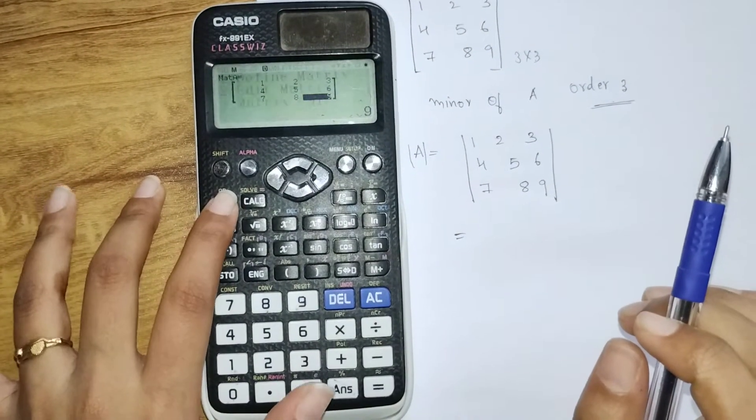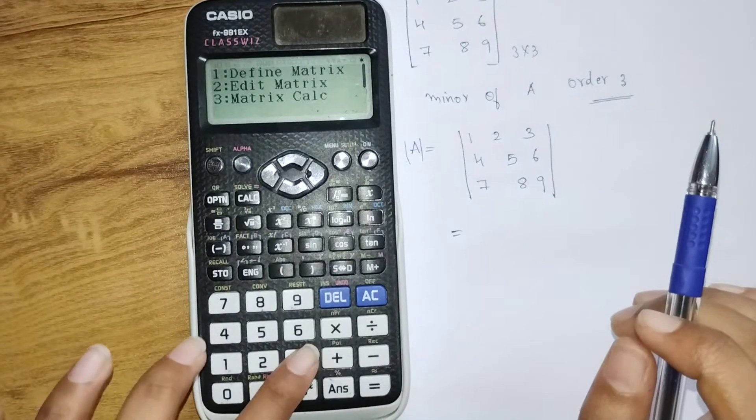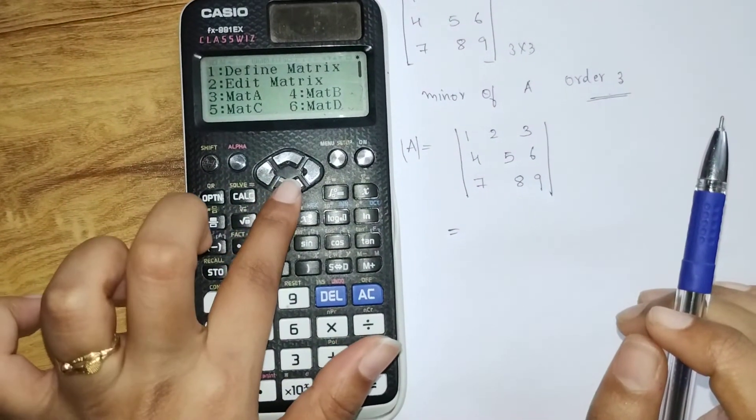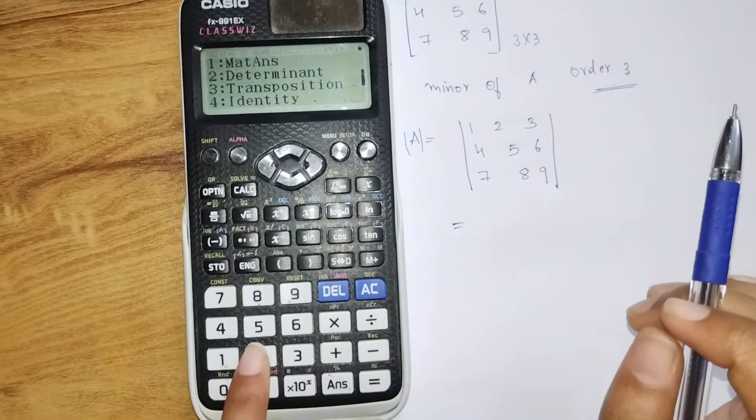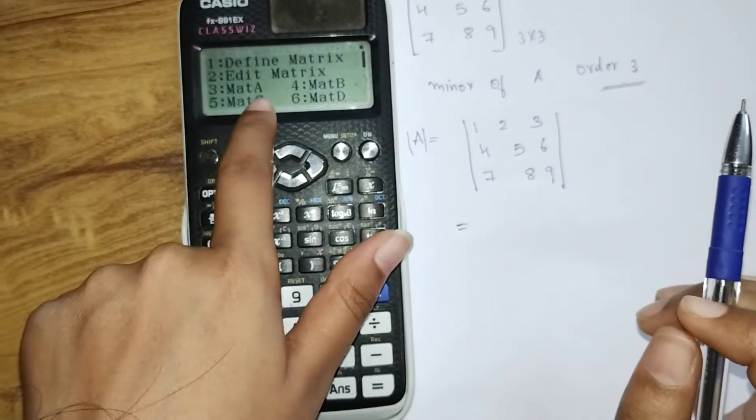Now again go to Option. We need matrix calculation, so that is 3. Go to 3. Again go to Option. Press the down arrow. We need determinant, that is 2. Again go to Option, click on 3.